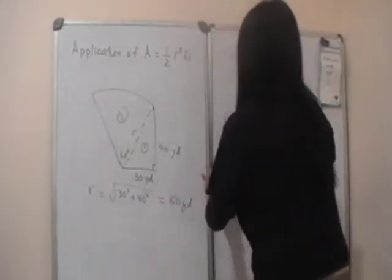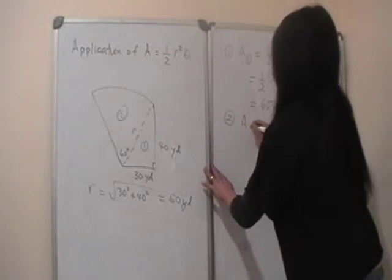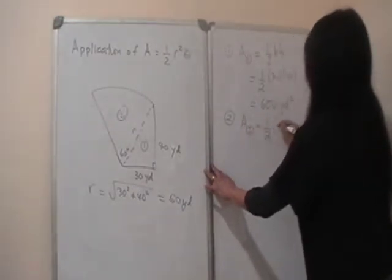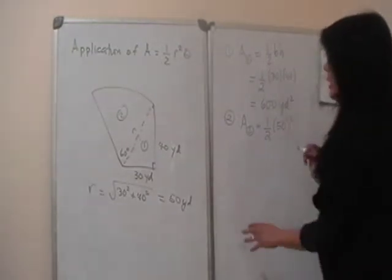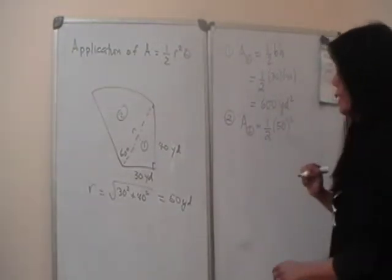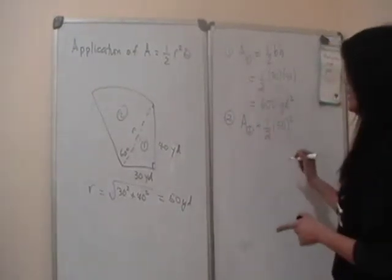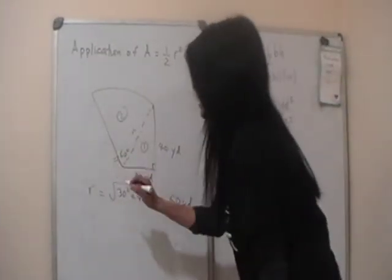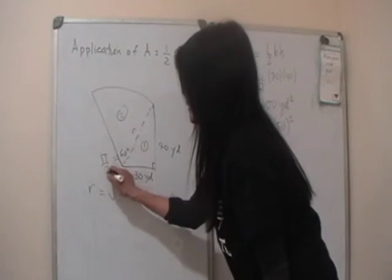Therefore, for lot number 2, the area of 2 is going to be half the radius squared, which is 50 squared times what? Theta. But theta is 60 degrees. We know that 60 degrees, let me just do it here, is pi over 3.